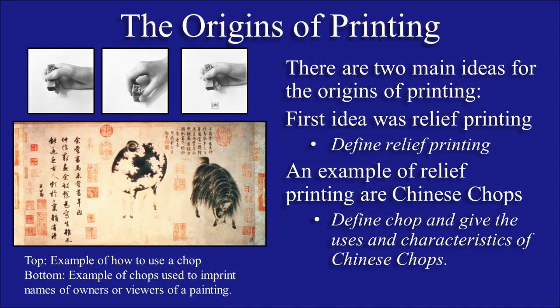In these images on this particular page, you're going to see along the top a chop. It's inked on the bottom, and then it's pressed upon a piece of paper. And along the bottom are examples of how chops were used to imprint names of owners or viewers of this particular painting.